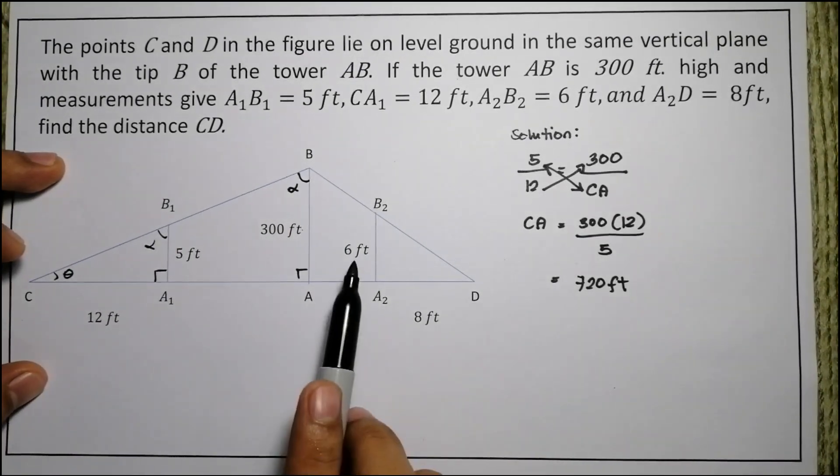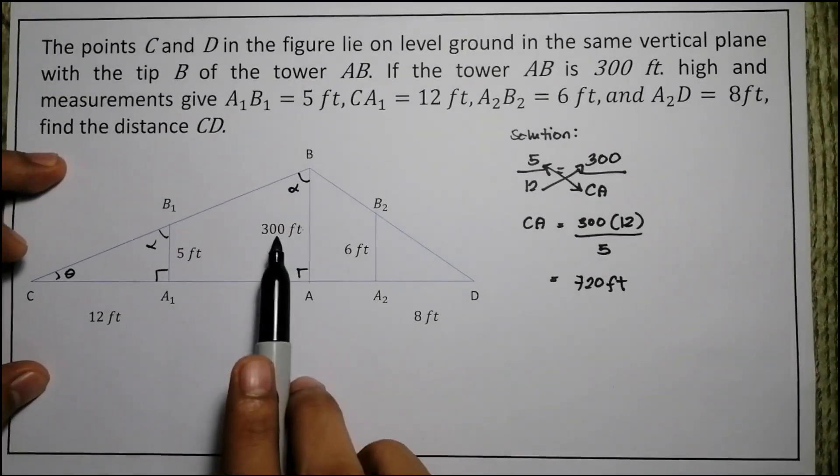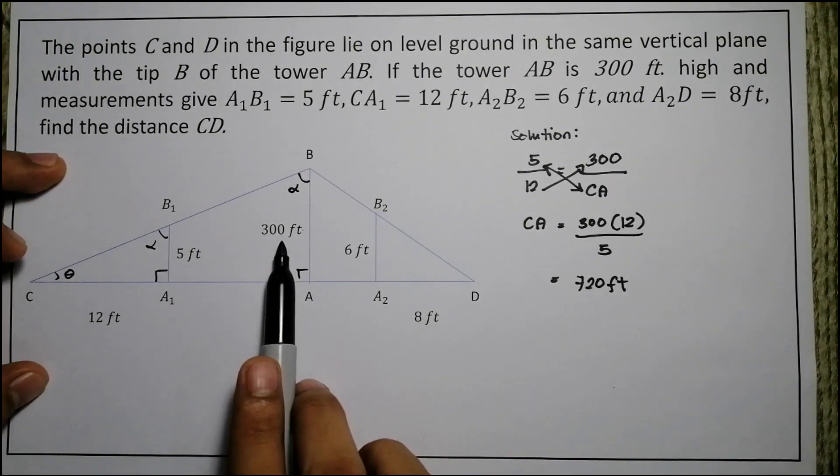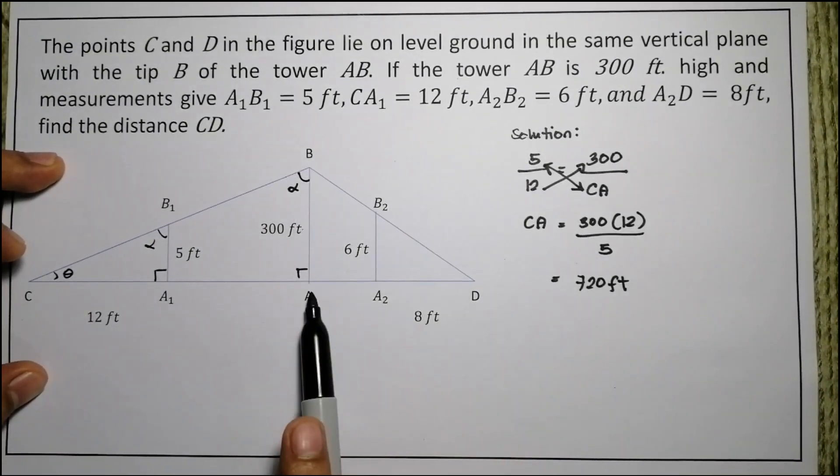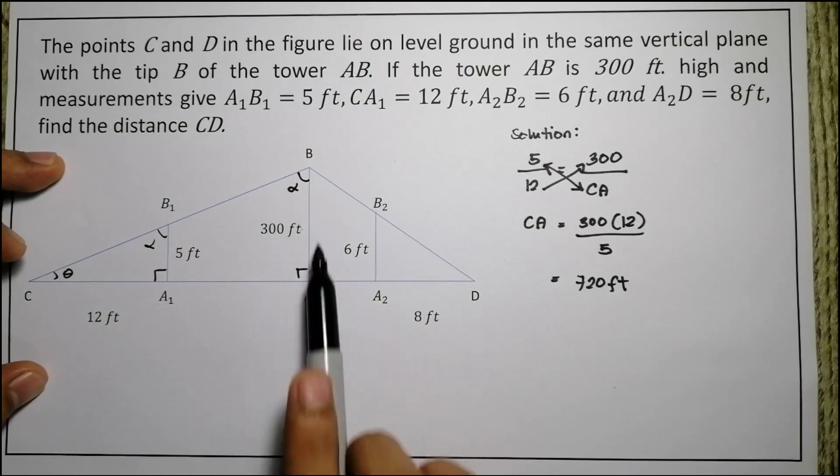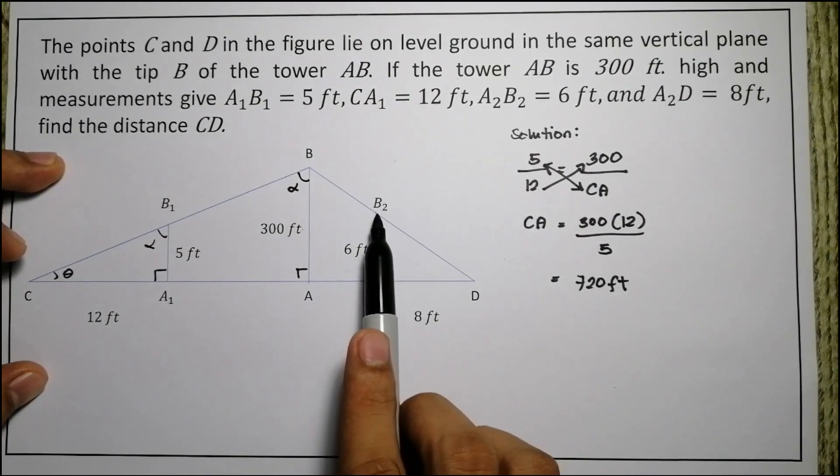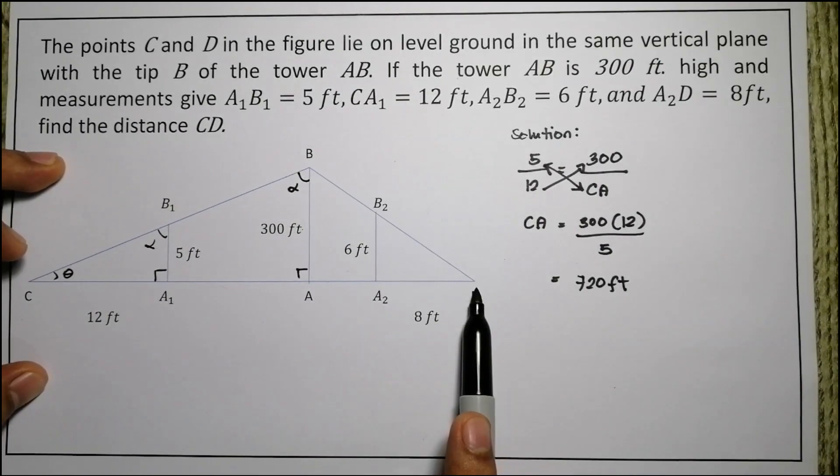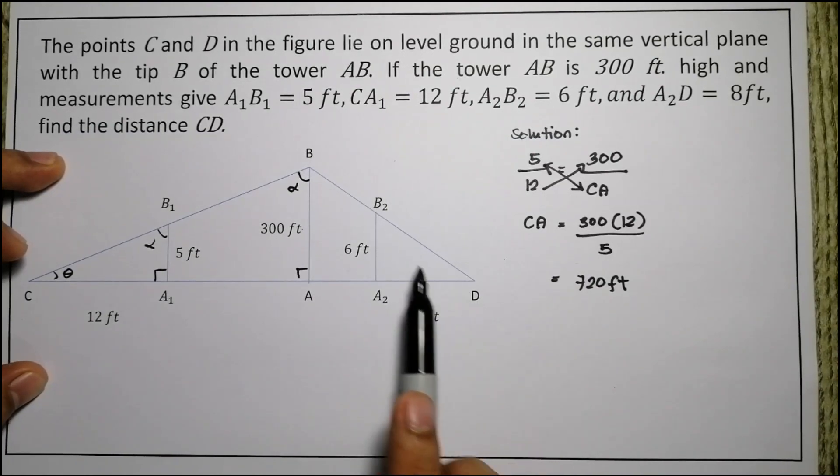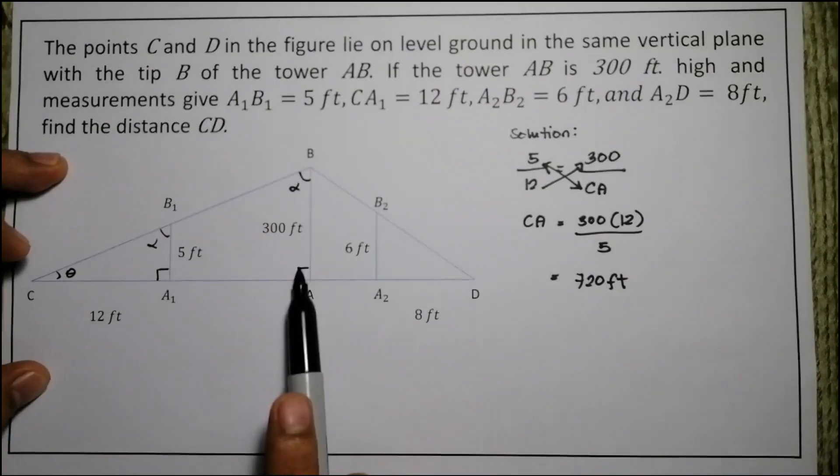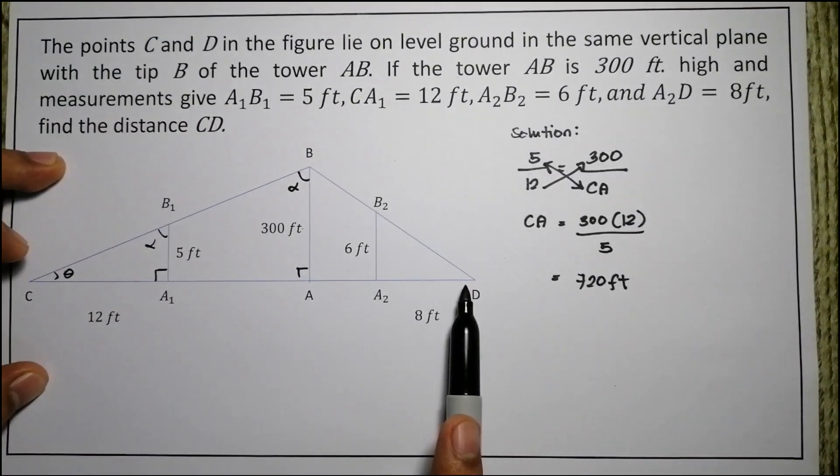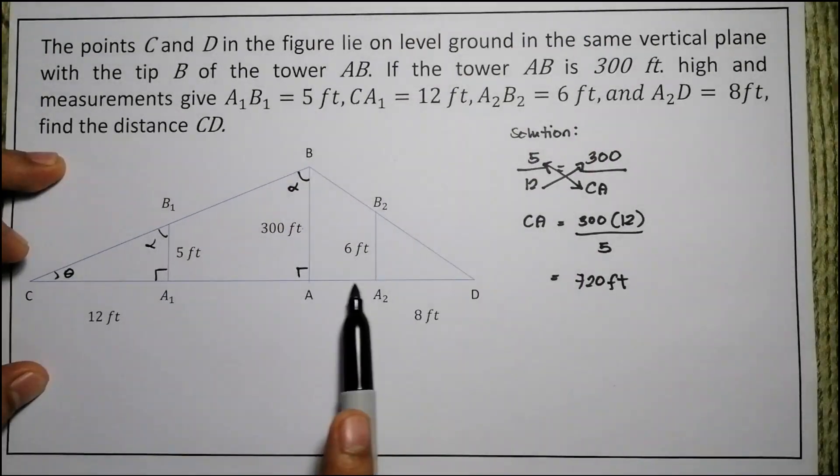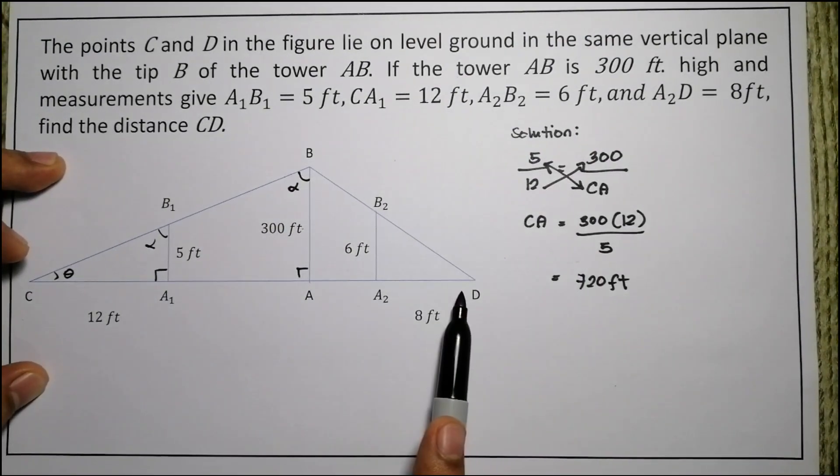So in this case, this side, the 6, is actually proportional to this side of the bigger triangle. So this triangle BAD is actually similar to the smaller triangle B₂A₂D. We can see that the vertical side, 6, is similar to or proportional to 300 feet. Now, the 8 feet here, from A₂ to D, will be proportional to the side A to D.